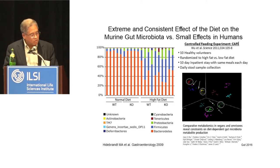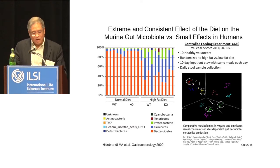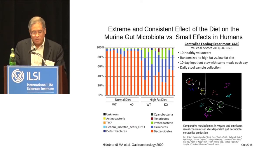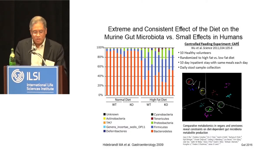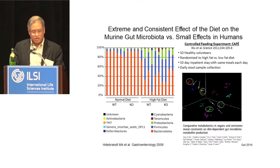That's very different from what we saw in mice. In mice, it's a very consistent and very large change. In humans, it's inconsistent and very small. Vegans and omnivores have a very different diet, but the gut microbiota composition between a vegan and an omnivore is very, very small. This is one of the challenges we face when we focus on mouse data and diet compared to humans.